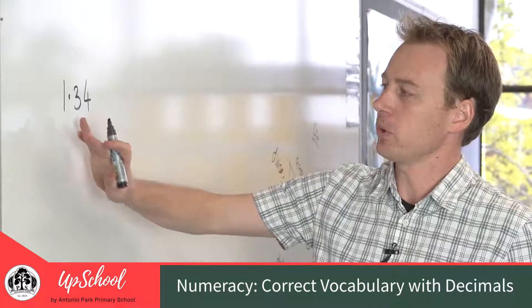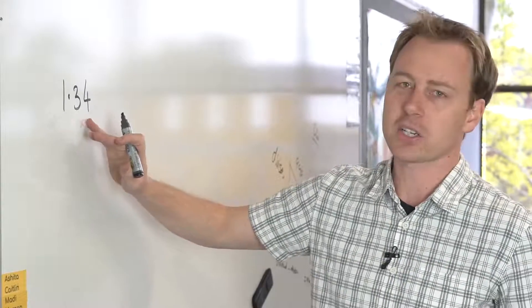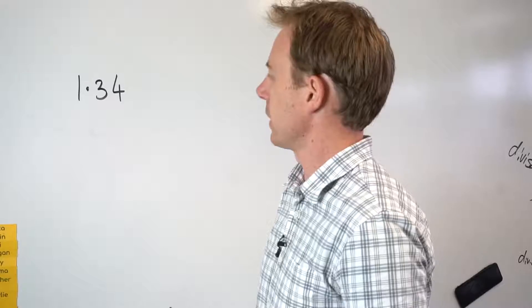We can see here we've got a whole number on the left hand side of the decimal point, and then we've got our fractions of numbers on the other side of the decimal point.